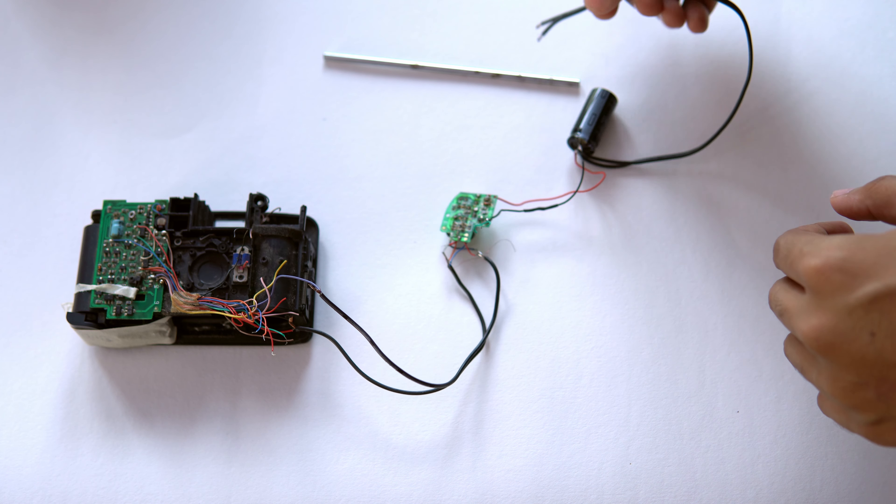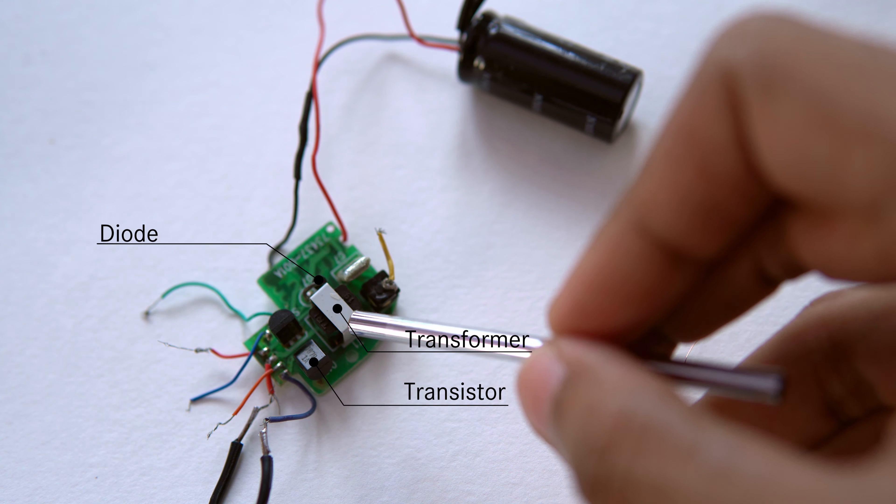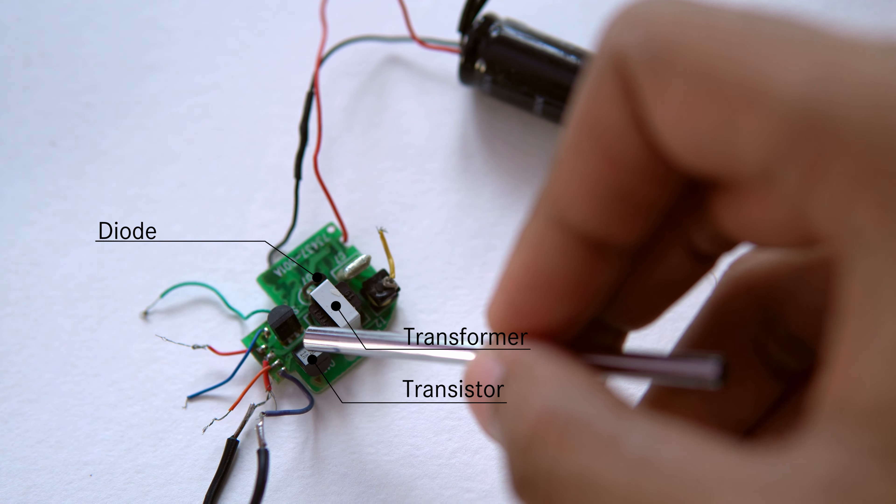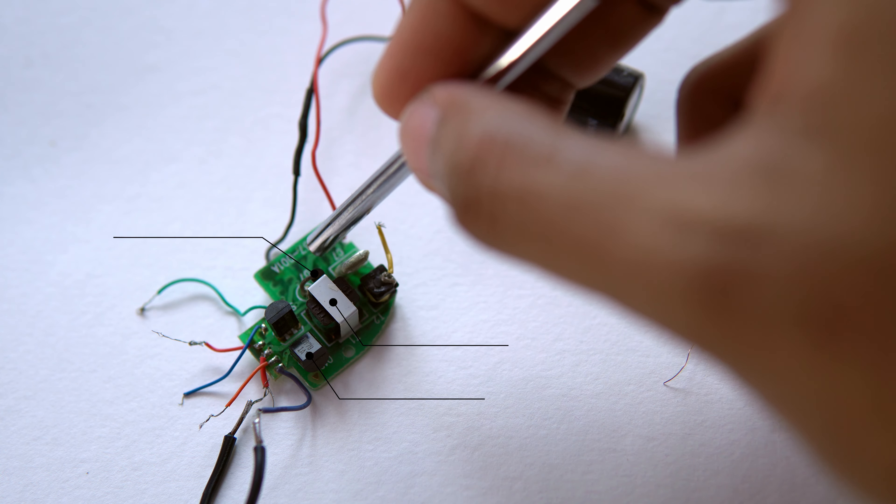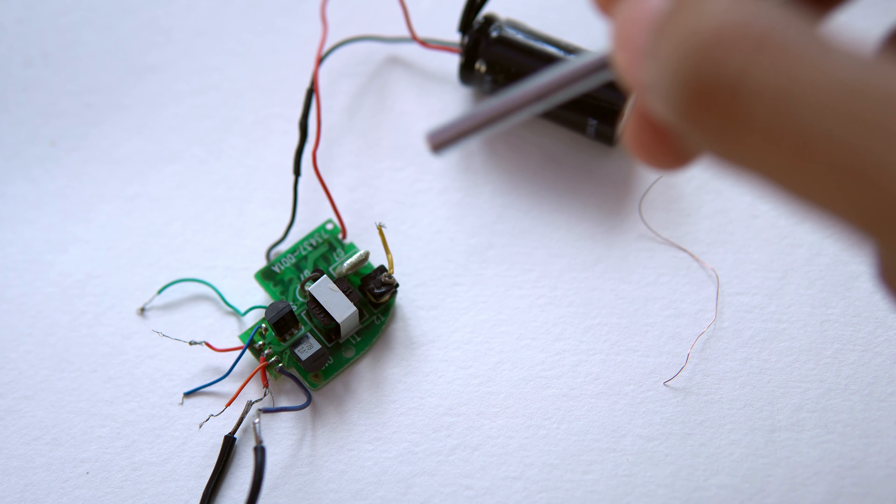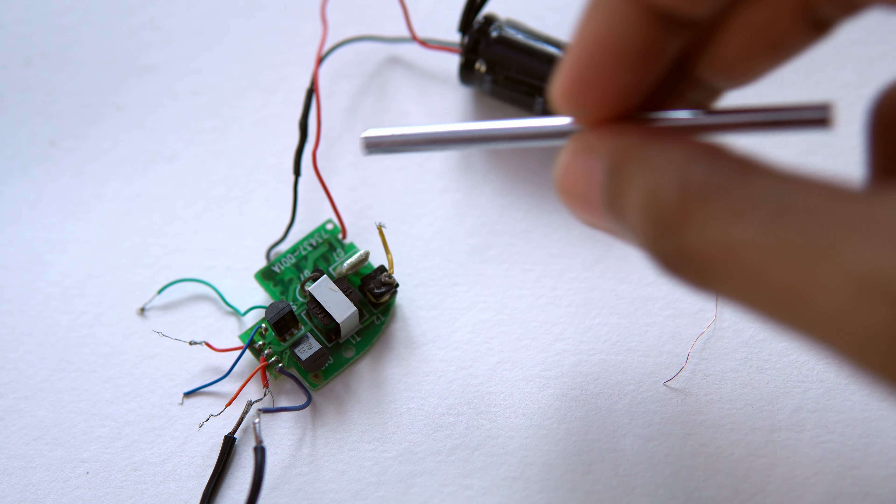I am going to use this flash circuit from an old camera for giving power to the coil. This has a 300V 150uF capacitor and a charging circuit. Important parts are a transformer to step up 3V DC, a transistor which will act as an oscillator, and a diode to convert it back to DC.